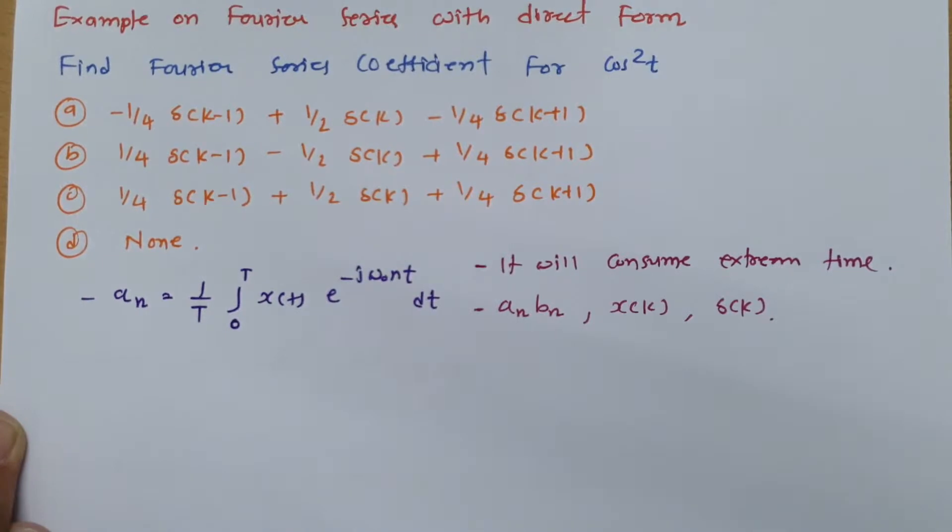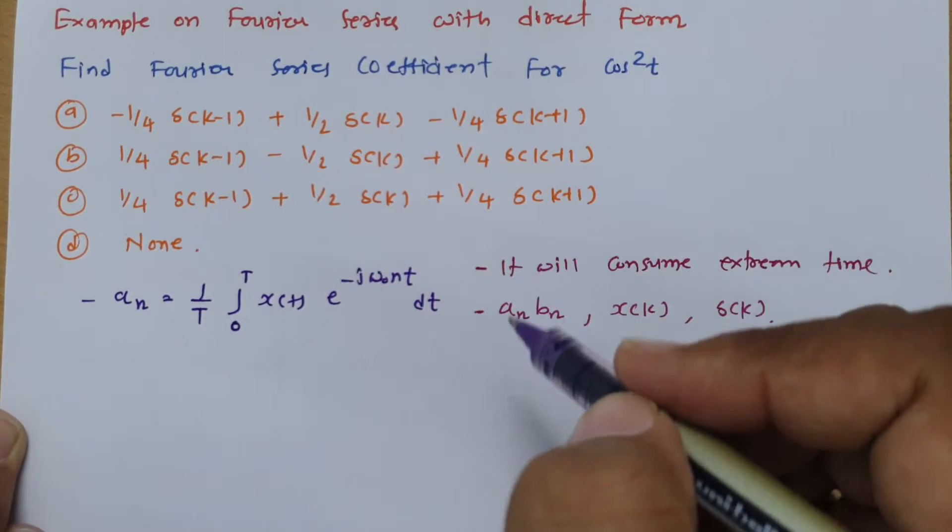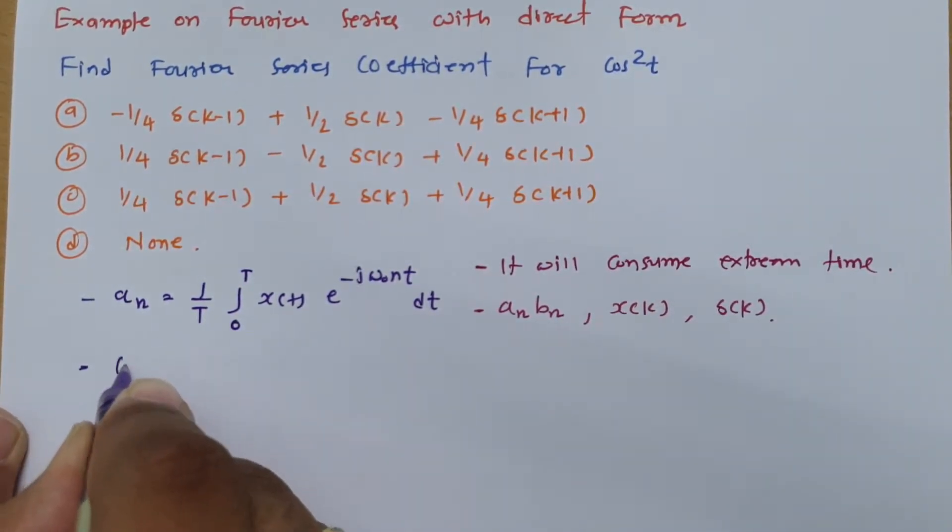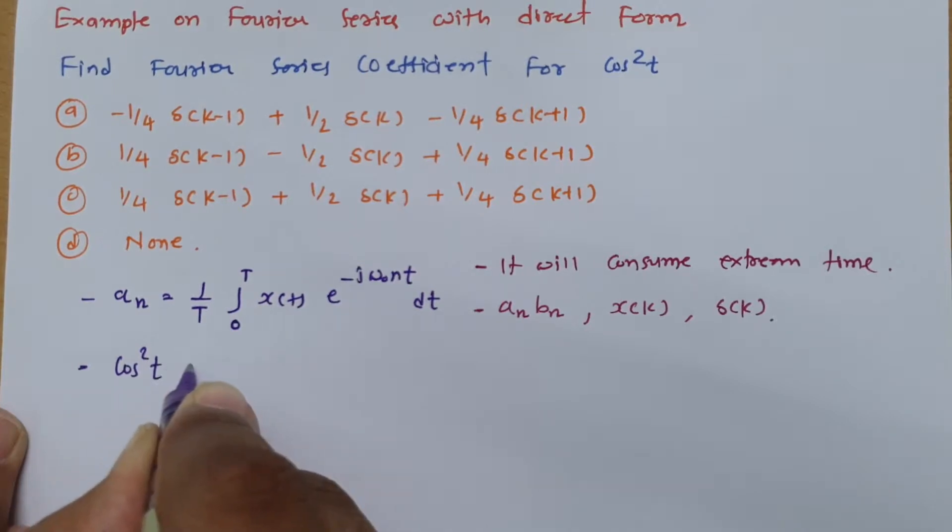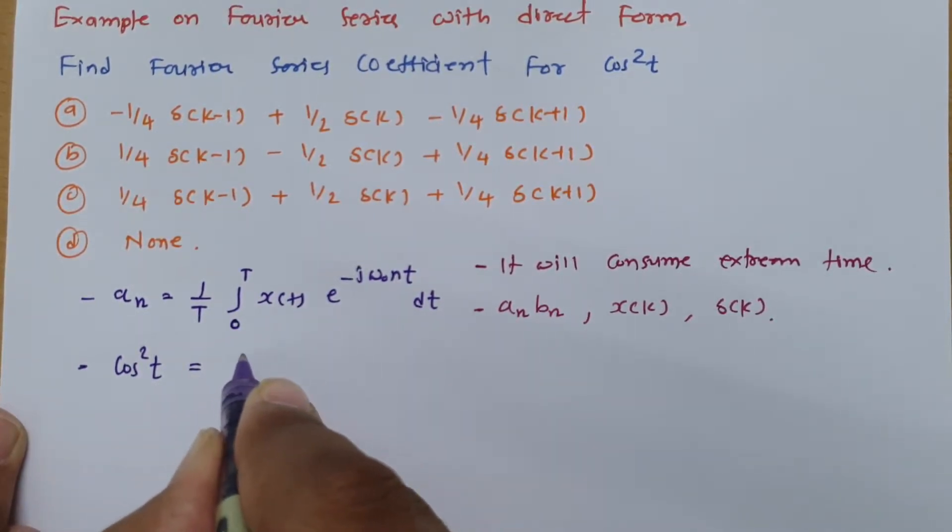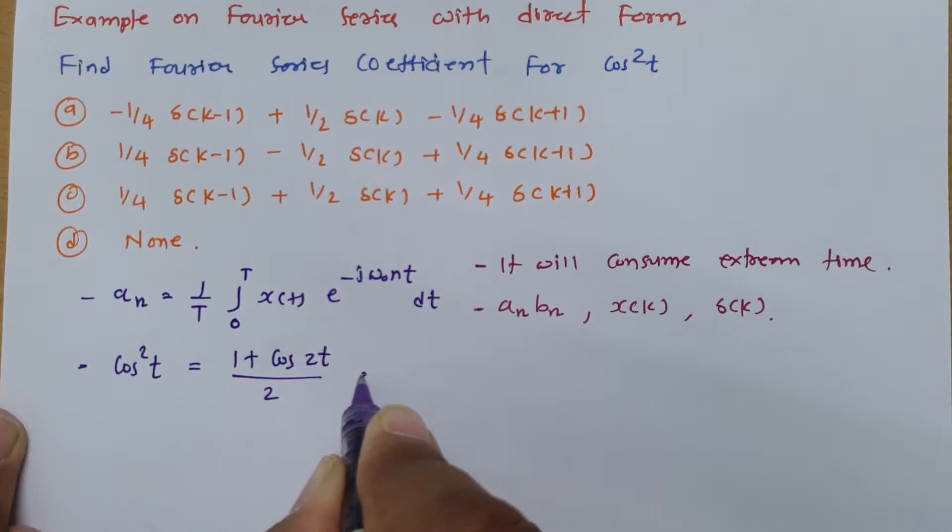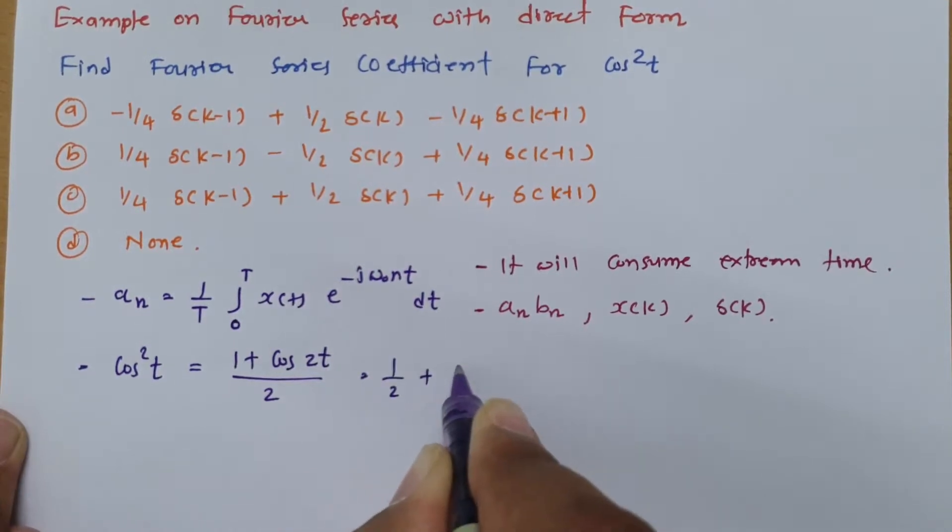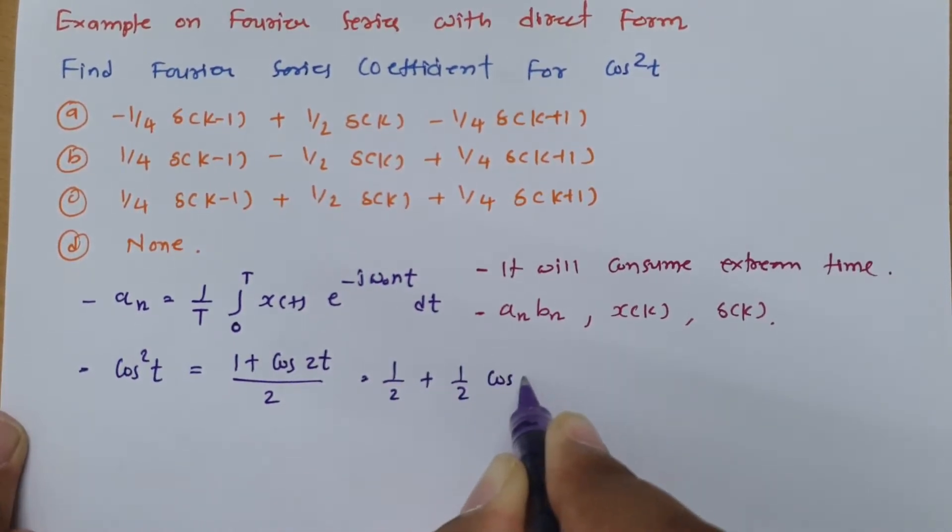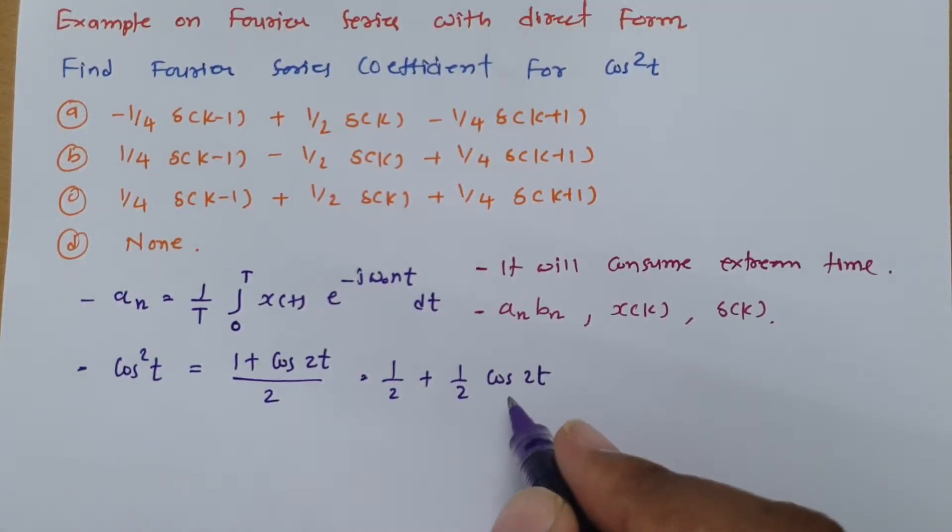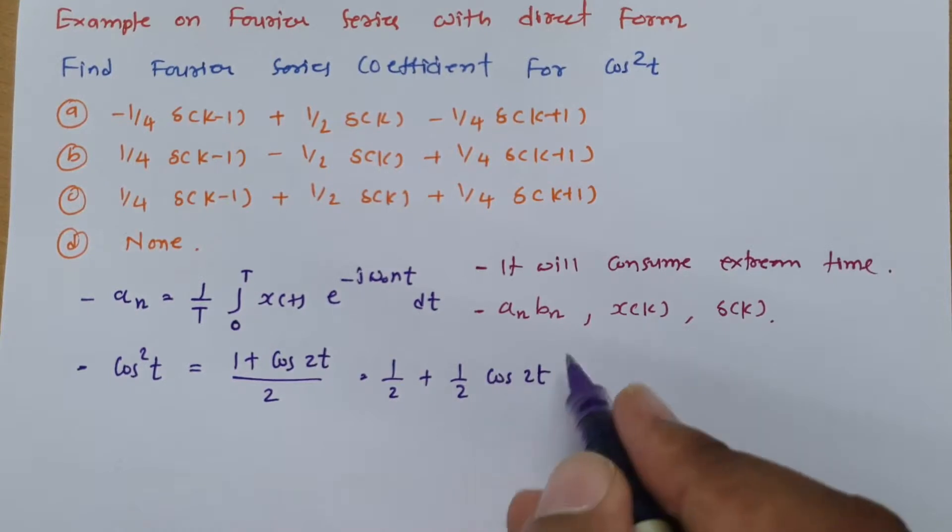So let us try to do that in this way. Okay, so I will be expanding this cos²t in terms of exponential term first. So if I have cos²t, then basically cos²t that is 1 plus cos2t divided by 2. So we can say this is half plus half into cos2t. Now see this cos2t that we can represent further in exponential terms.